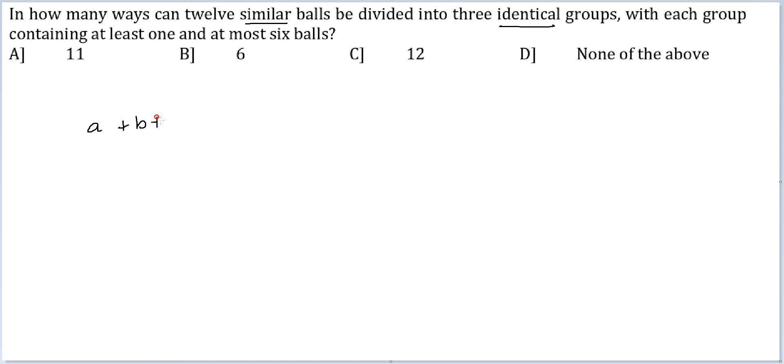So A plus B plus C is equal to 12. Every group is supposed to get at least 1. Give at least 1 to everyone so this can become 9. And now, 9 letters, 2 partitions. So 11C2. So I get 55 ways.